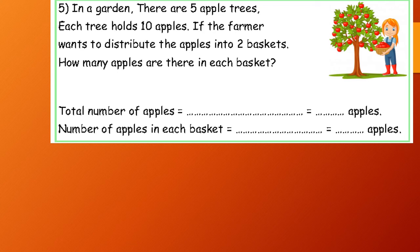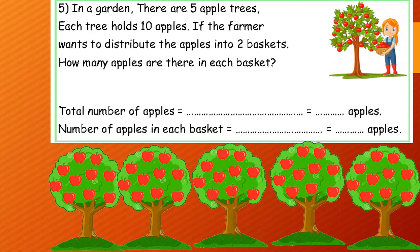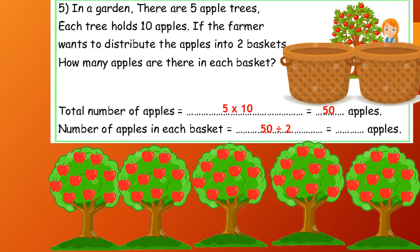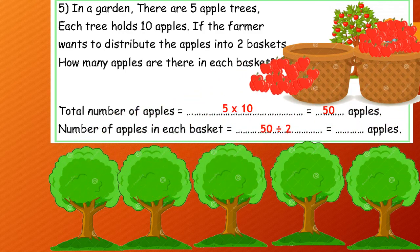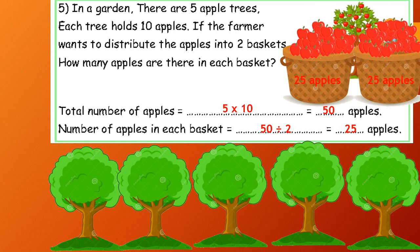So the total number of apples in the five trees: five trees, in each tree ten apples. So 5 by 10, 50 apples in the five trees. Okay, number of apples in each basket: we distribute all these 50 apples into two baskets. So 50 divided by 2 equals 25 in each basket.